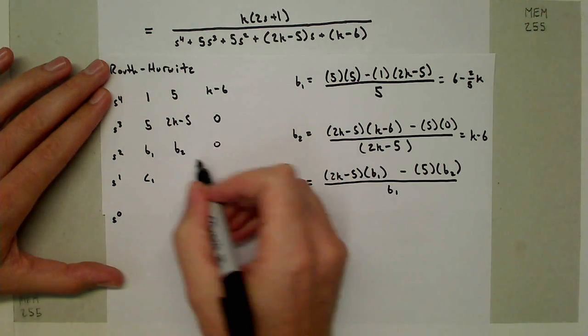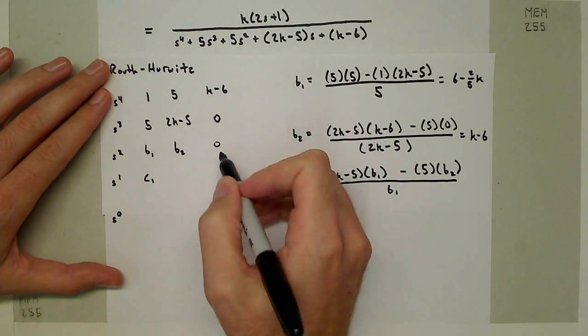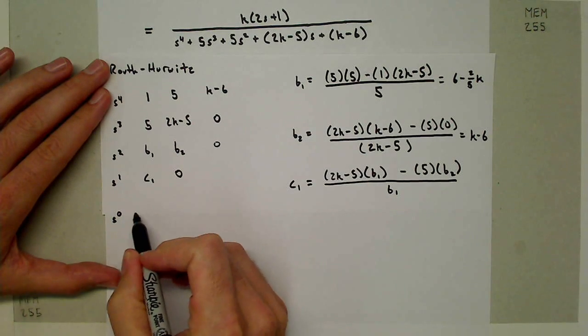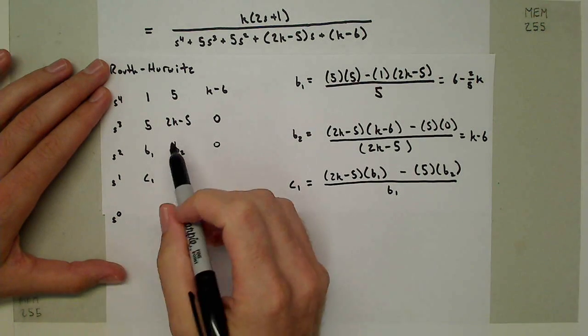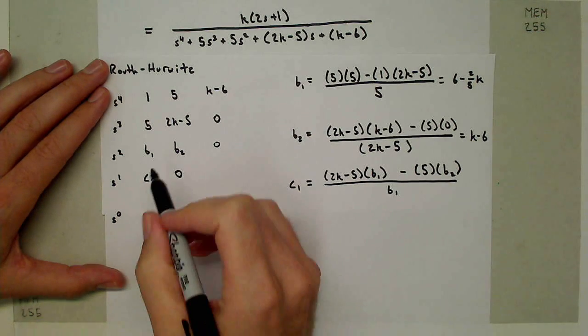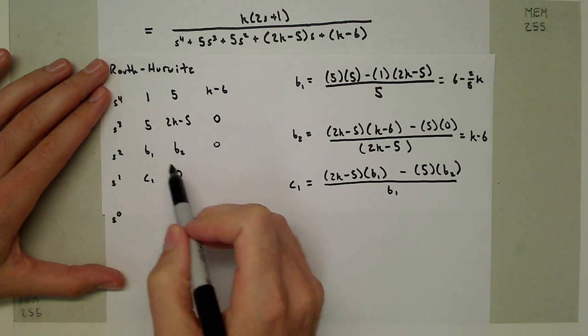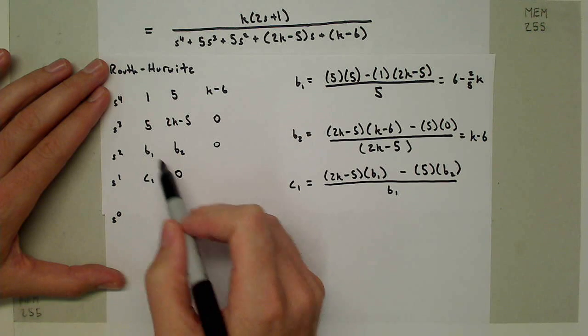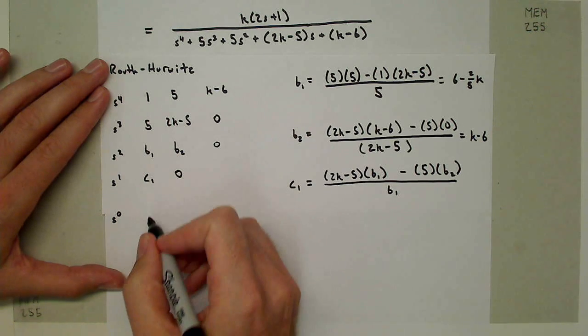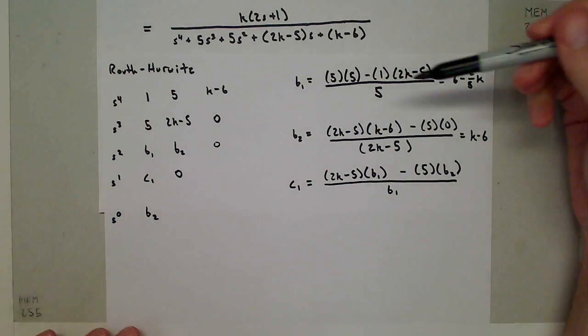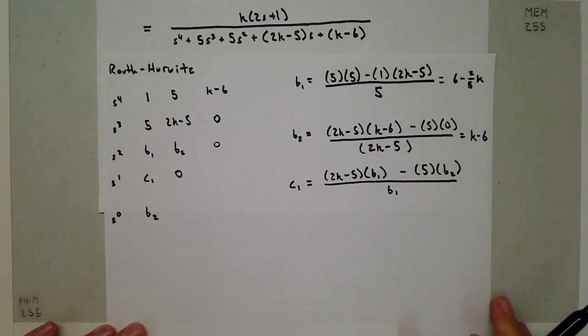Since this term here is 0, then this term will be 0 here. And solving for this term right here is relatively simple because of how these terms ended up. We just have B2 times C1 minus 0 divided by C1, just giving B2 down here, where B1, B2, and C1 are expressed over here.